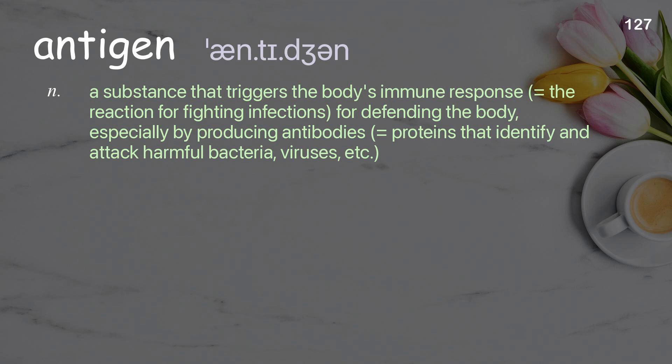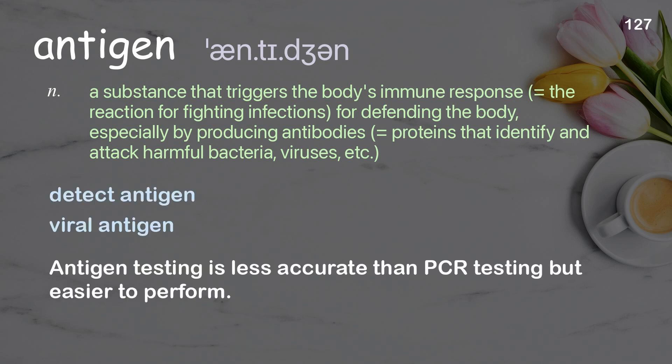Antigen: a substance that triggers the body's immune response — the reaction for fighting infections and defending the body — especially by producing antibodies, which are proteins that identify and attack harmful bacteria, viruses, etc. Examples: detect antigen, viral antigen. Antigen testing is less accurate than PCR testing, but easier to perform.